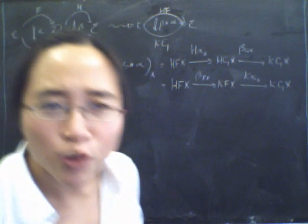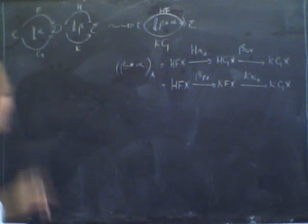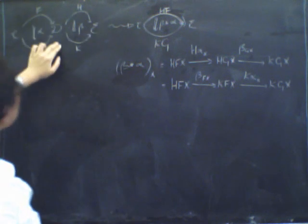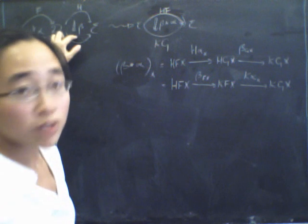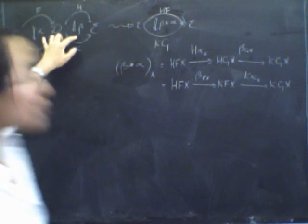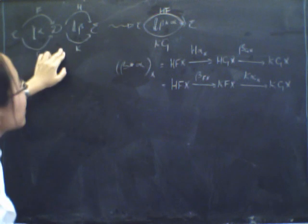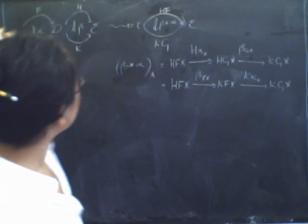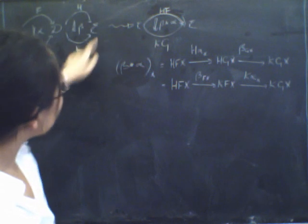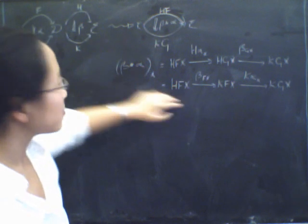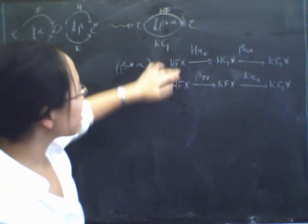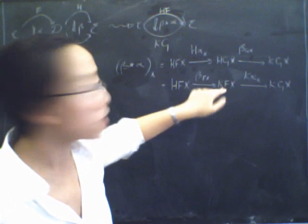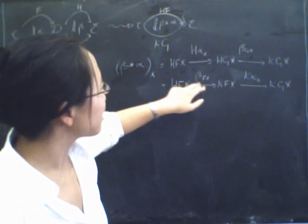I didn't really tell you the whole story last time. Remember, this is how we define horizontal composition. We're starting with a configuration where we've got two natural transformations, alpha and beta, that are kind of side by side. The aim is to produce a natural transformation that goes from the composite along the top to the composite along the bottom. And there were two ways of doing it, but they were both the same because of the naturality of beta.